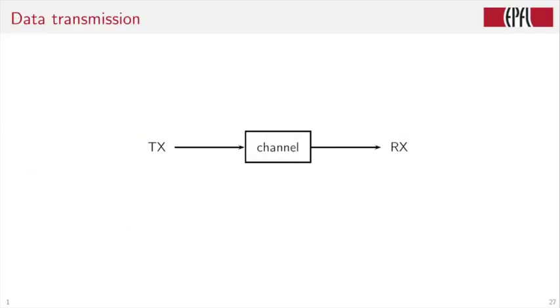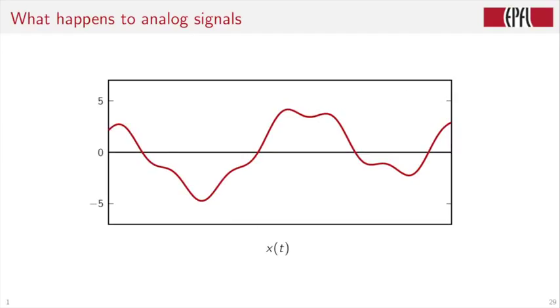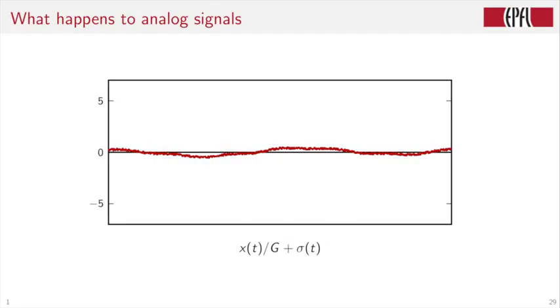Data transmission has also gone from analog to digital. So let's look at a very simple model here. You have on the left side, the transmitter. You have a channel. On the right side, you have a receiver. What happens to analog signals when they are sent over a channel? So X goes to the channel. It's first multiplied by one over G because there is path loss. And then there is noise added, indicated here with a signal sigma of T. The output is X hat of T. Let's start with some analog signal X of T. Multiply it by one over G. And add some noise.